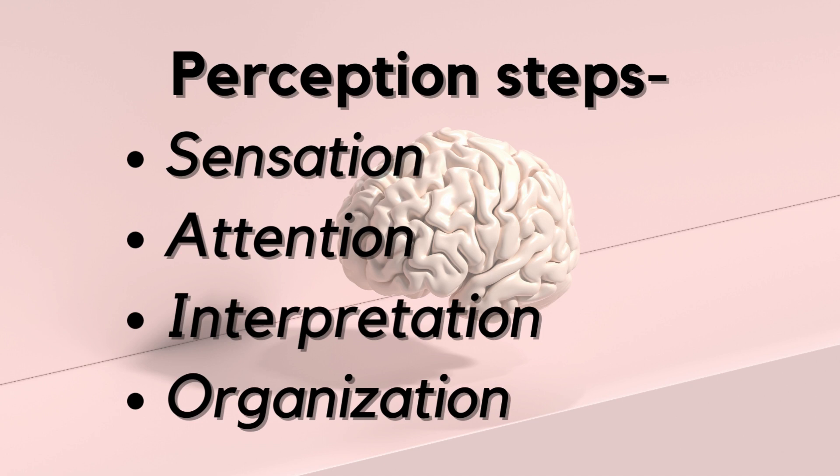The second process is attention. Attention is about focusing your mind on specific things. It's like when you concentrate on the flower and ignore the other distractions around you.